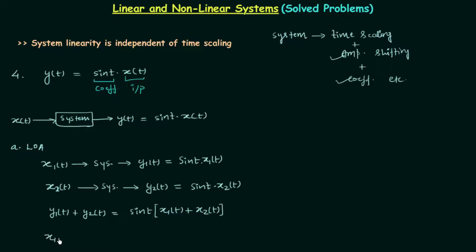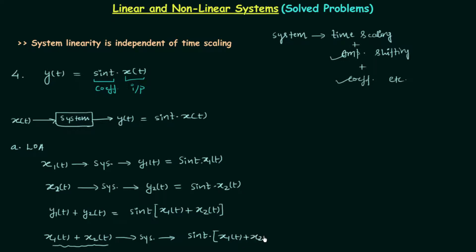Now we will add the inputs directly: x1(t) plus x2(t) fed to the system. The functionality of the system is to multiply sin(t) to the given input. The given input is x1(t) + x2(t), so sin(t) is multiplied to x1(t) + x2(t). Comparing the two results, you will find they are the same, so this system follows the law of additivity.